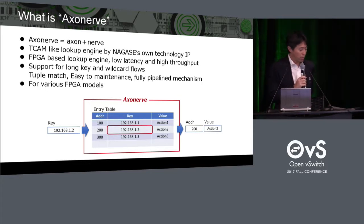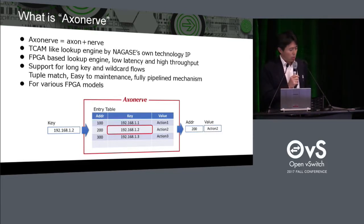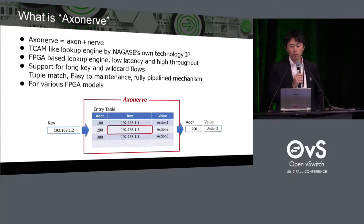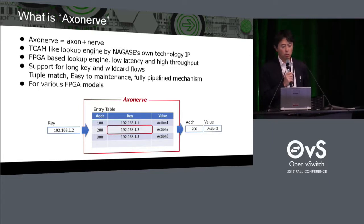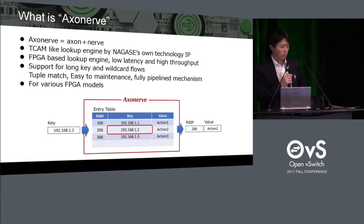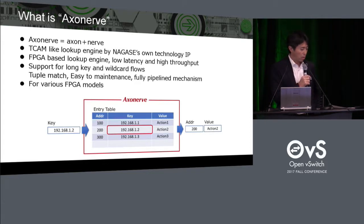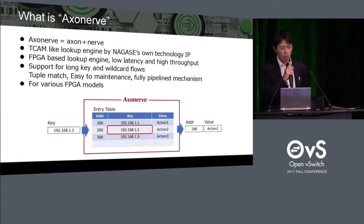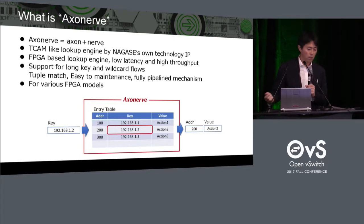I'd like to start with an introduction to our technology, Axanab. Axanab is our original technology focused on the lookup engine, like a TCAM device, or replacing hash tables. It is a unique and powerful hardware-based technology running on FPGA. It supports long-key 500-bit and targets 1 million flow tables, with wildcard capability, high throughput, and very low latency. Axanab doesn't need a whole CPU because we're running on FPGA.